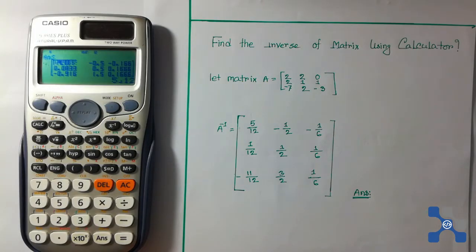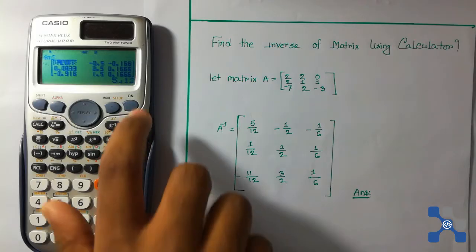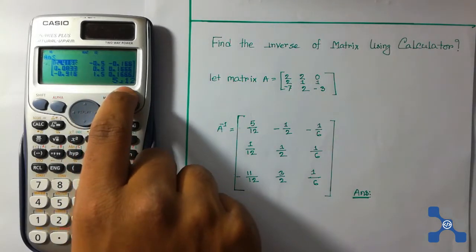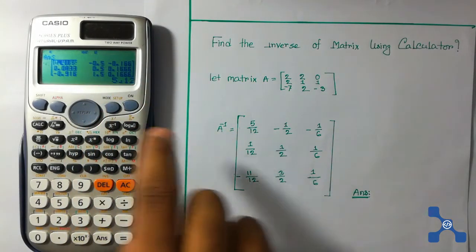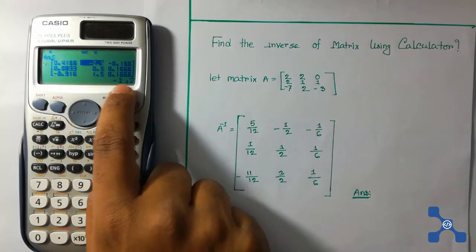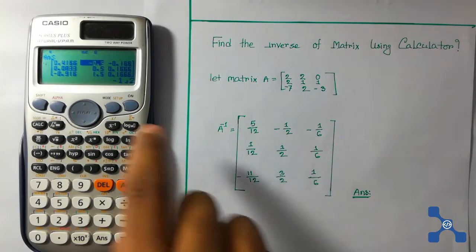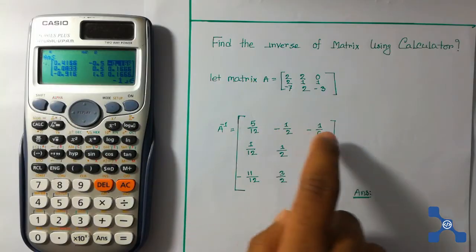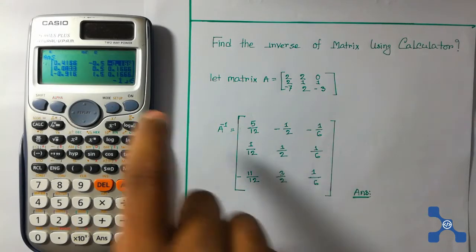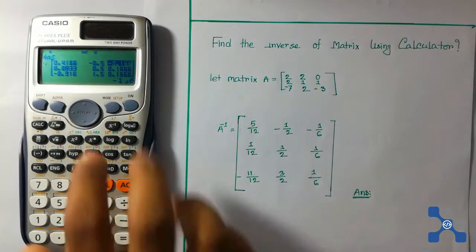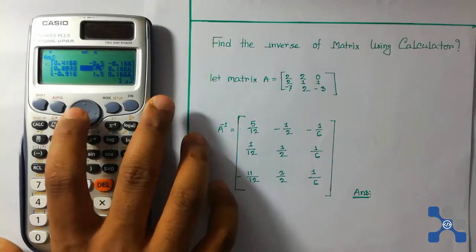We can see the inverse of the matrix. The first element is 5/12, the second element is -1/2, and the third element is -1/6. Here we see all the elements of our resultant matrix.